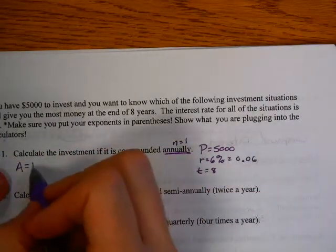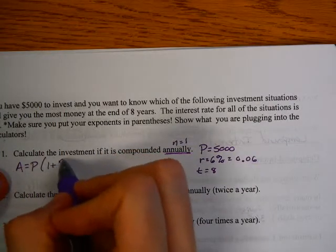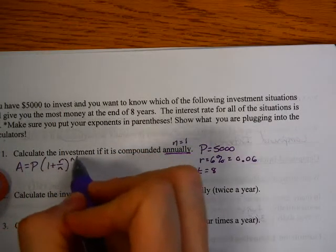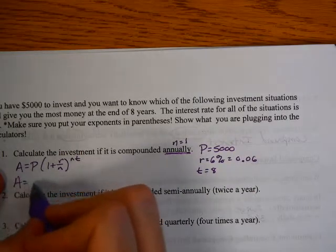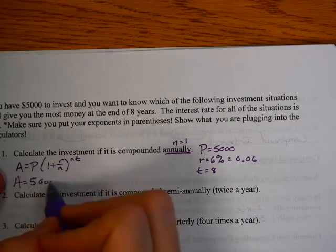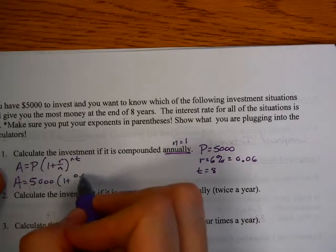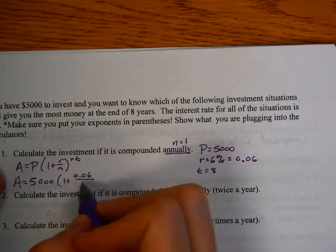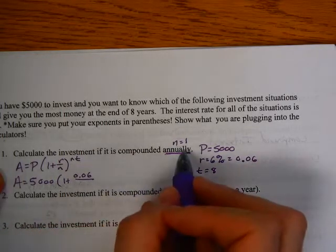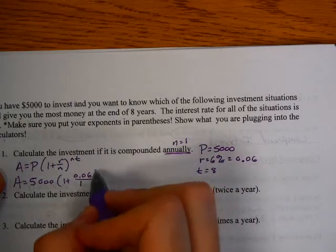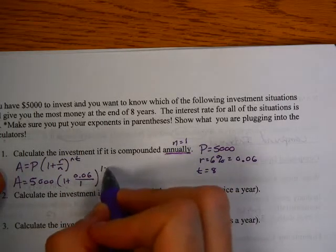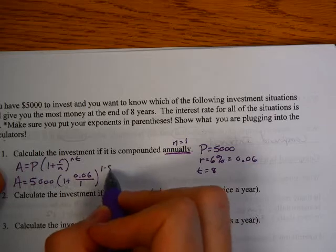So again, you substitute all your variables into your formula. So the principal is 5,000 in this case. And it's 1 plus the rate, which has been changed to a decimal, divided by how many is it compounded? It's compounded annually, so that's 1. And 1 times t, which is time, which is 8 years.